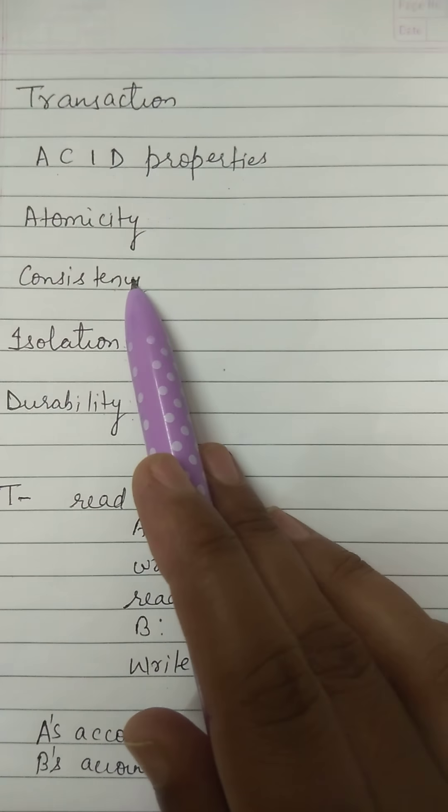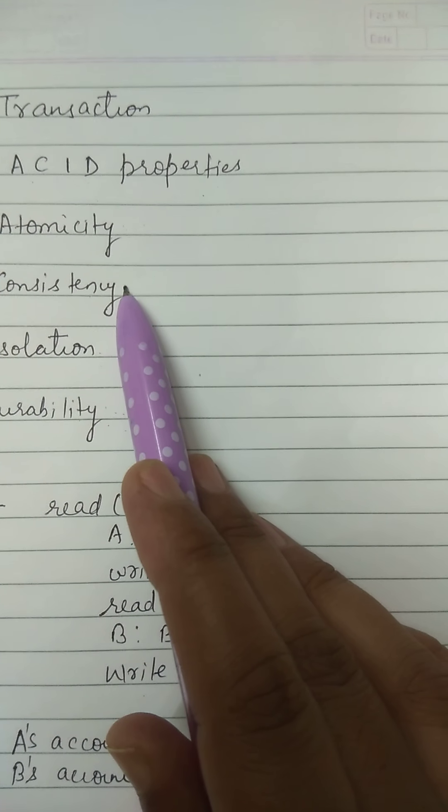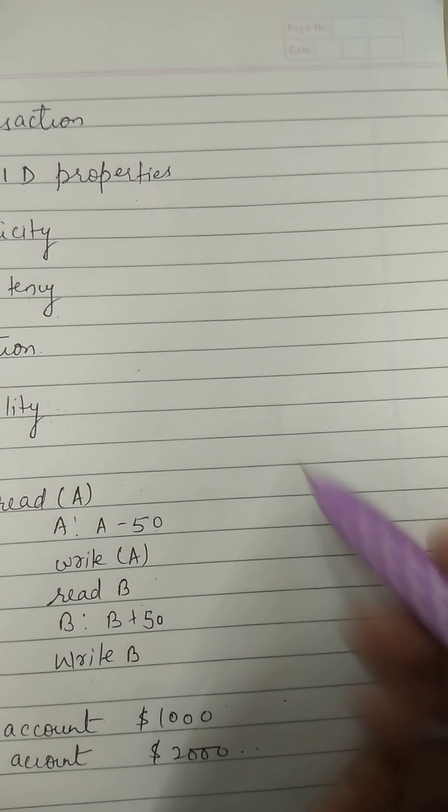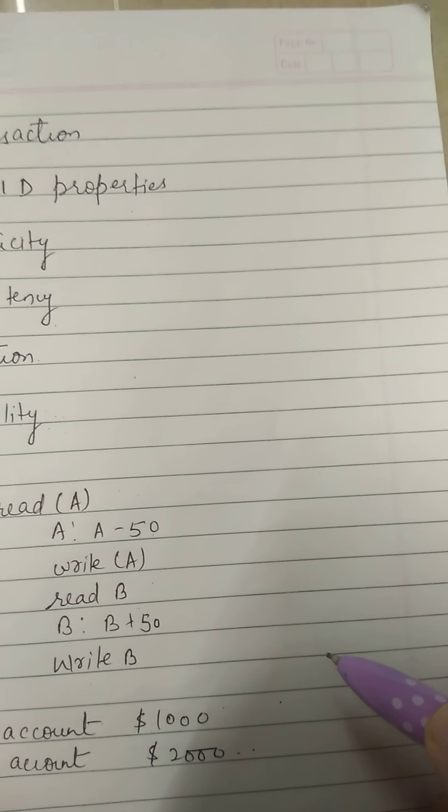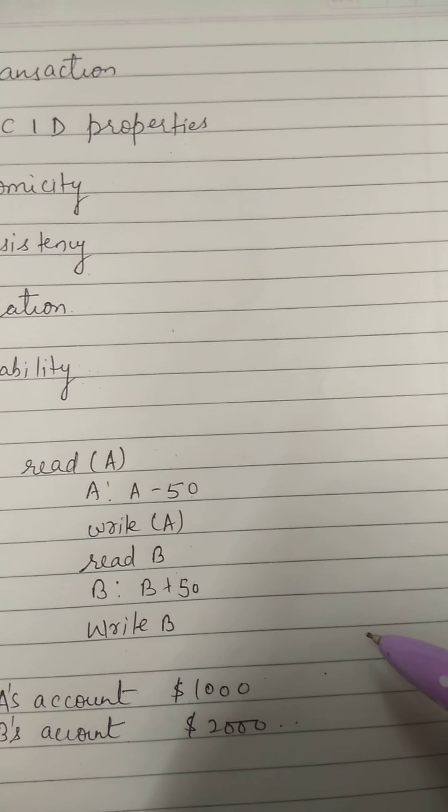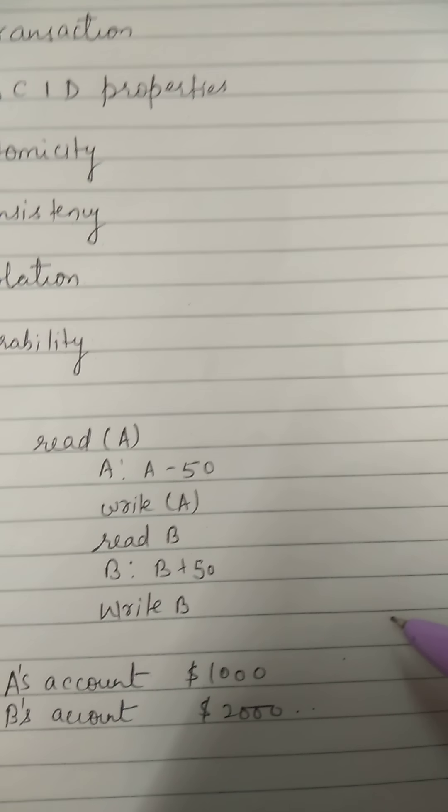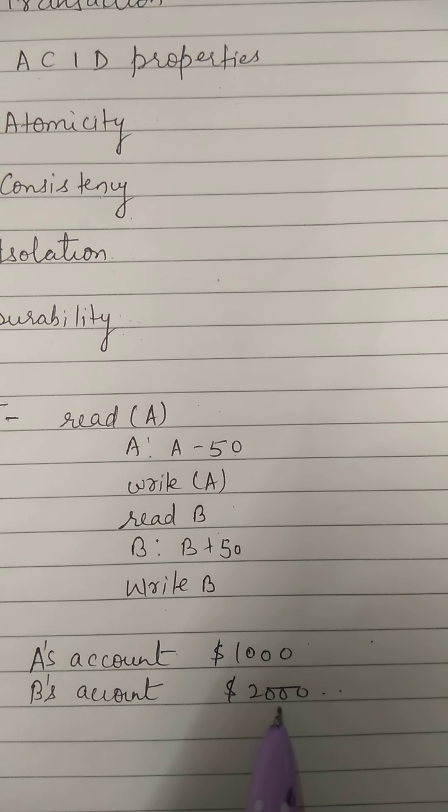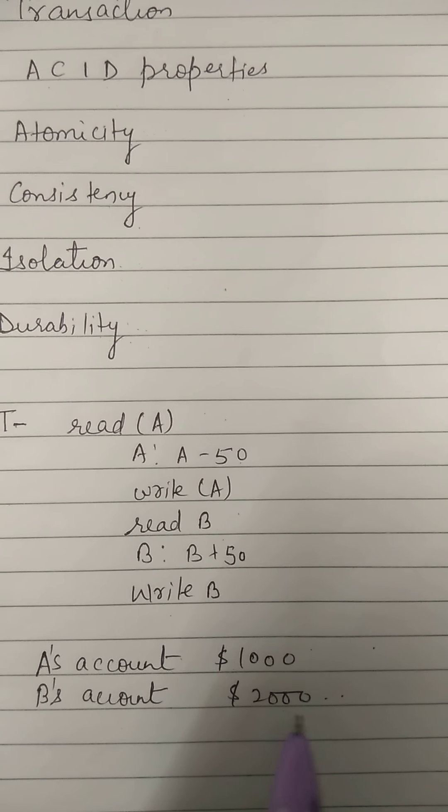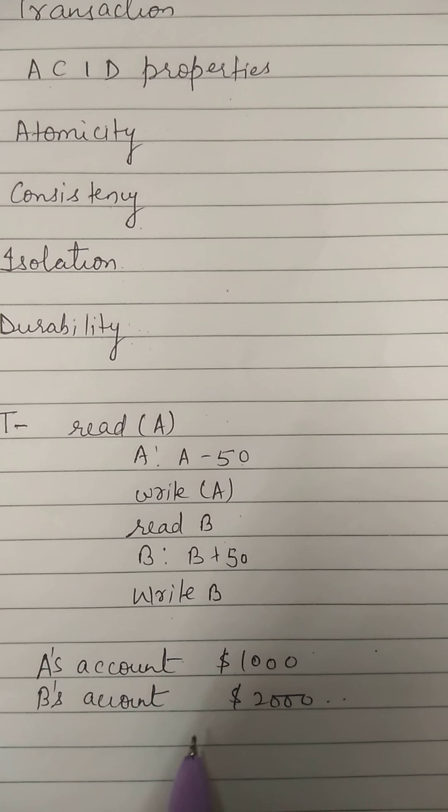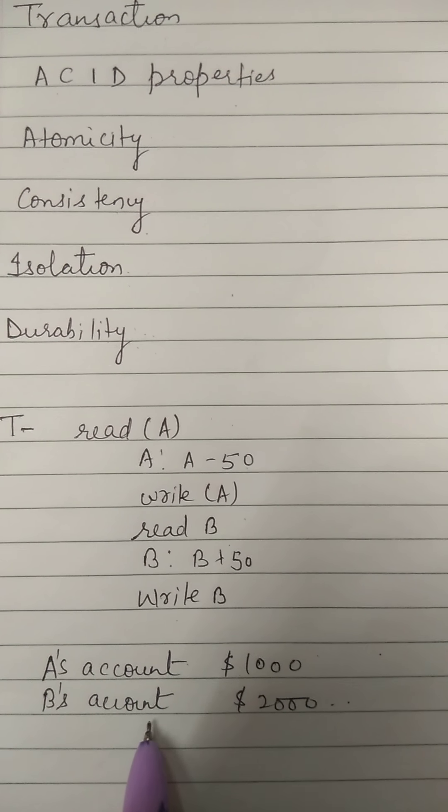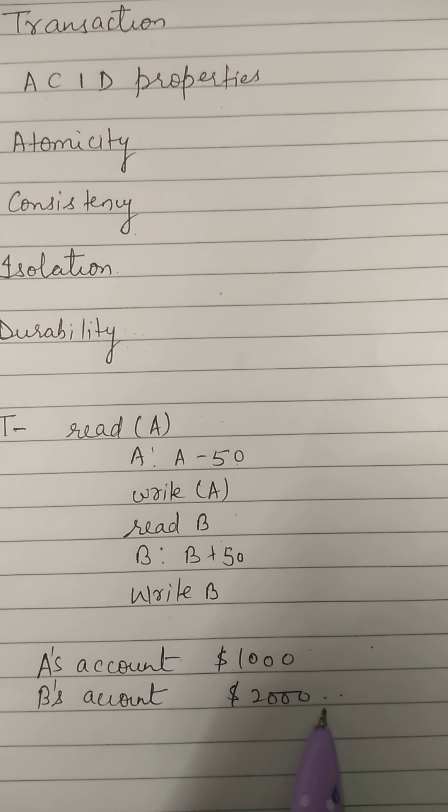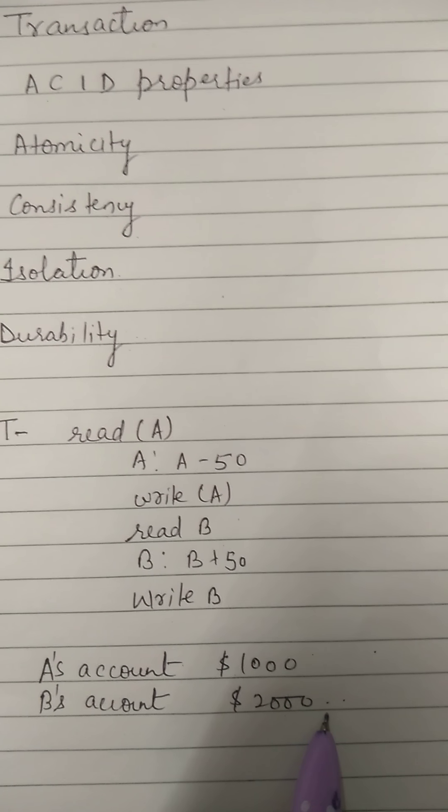So what does consistency property say? Consistency requires that the sum of A and B be unchanged by the execution of the transaction. That means initially A and B accounts have $1000 and $2000 respectively. So after the end of transaction, the addition of account A and B's amount will remain the same, that is $3000.